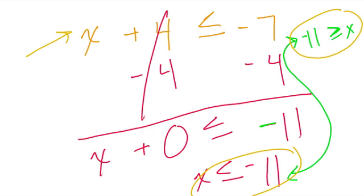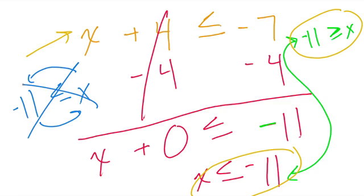So you have to be careful. You can't change this so it says something like x is greater than or equal to negative 11. You have switched the values, but not switched the inequality. So this would be wrong.